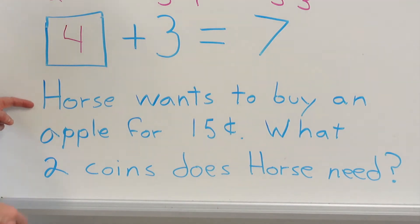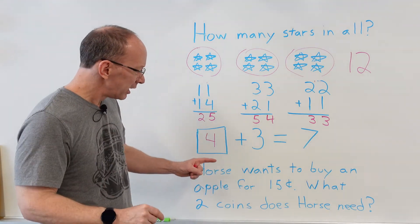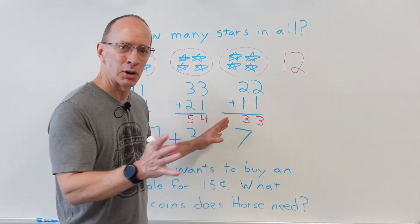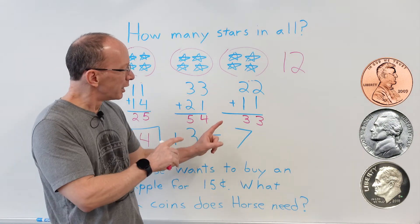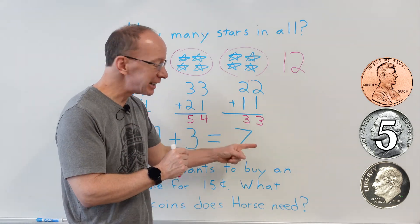Let's take a look at our math story problem of the day. Horse wants to buy an apple for 15 cents. I know, Horse, I know you're getting hungry, hold on there. What two coins does Horse need? Now let's take a look at some coins right here. We have a penny which is worth one cent, and a nickel which is worth five cents, and a dime which is worth ten cents.